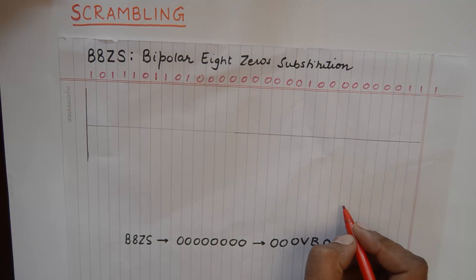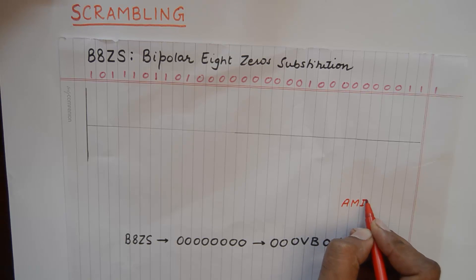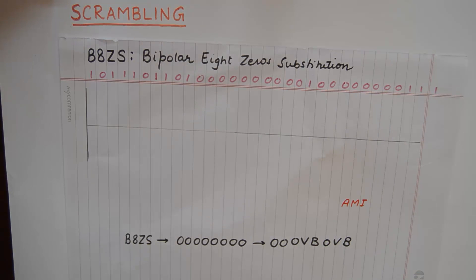Please understand that this technique is a modification of AMI as discussed in my previous video where we discussed HDB3. AMI is a line coding technique where a zero is represented by a zero voltage and a one is represented by plus V0 and minus V0 alternatingly.